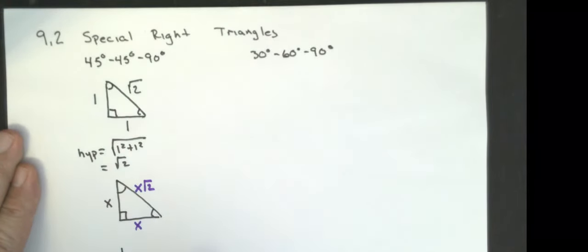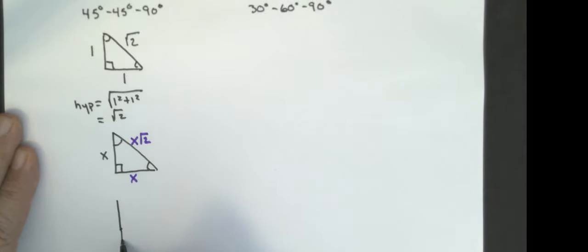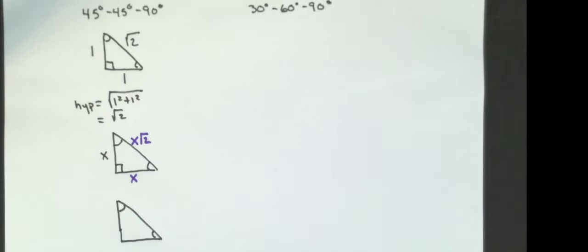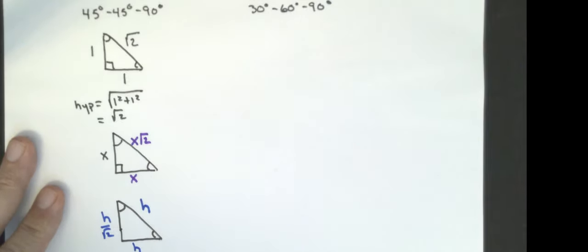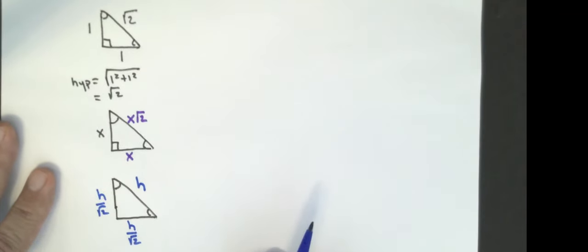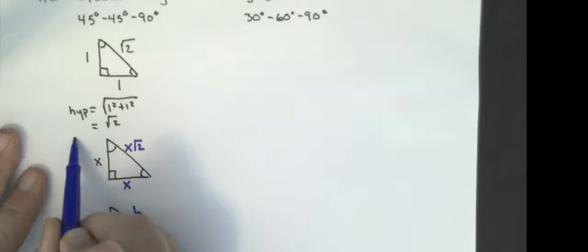If instead of giving you the leg they give you the hypotenuse — I'll call it h — instead of multiplying by the square root of two, you would divide by the square root of two. We're not going to leave any square roots of two in the bottom of our answers. So the formula your book gives you is: x, x, x root two — or one, one, square root of two.